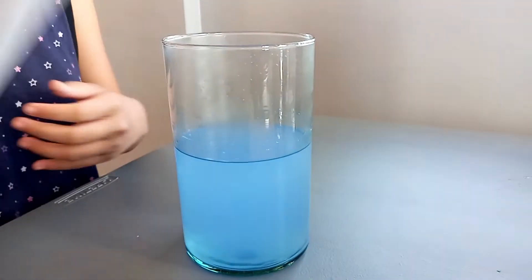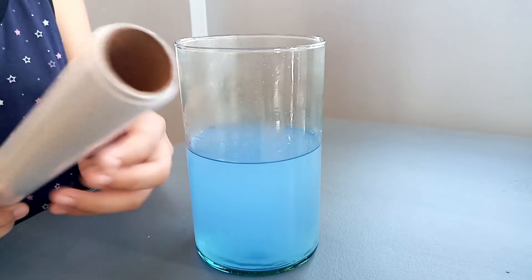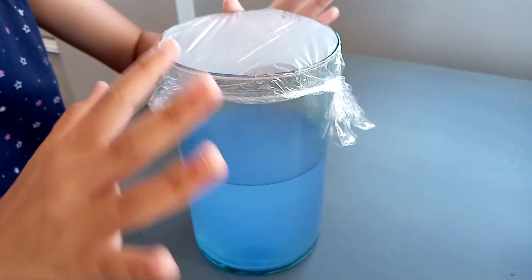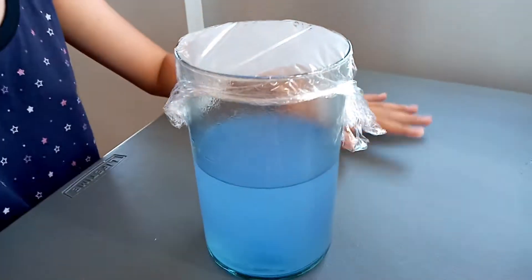Now to make the sky we'll add cling wrap. Here I already added it on to the big jar, so now this will act as the sky.